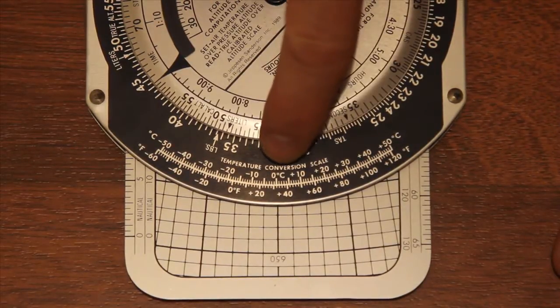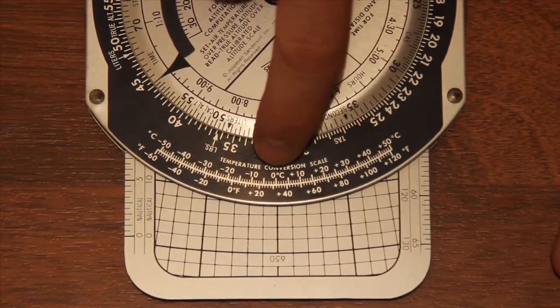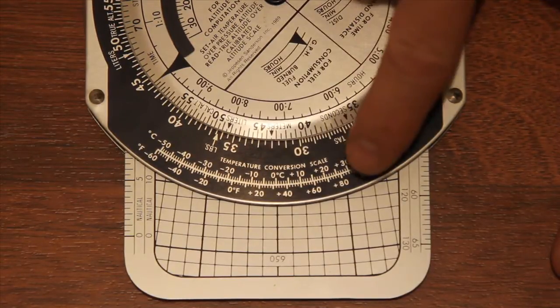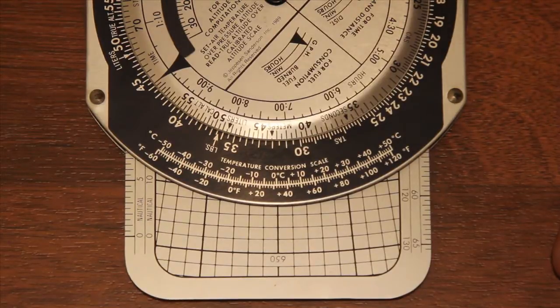So you can see that zero degrees Celsius is about 32 degrees Fahrenheit. 60 degrees Fahrenheit is about 15 degrees Celsius.